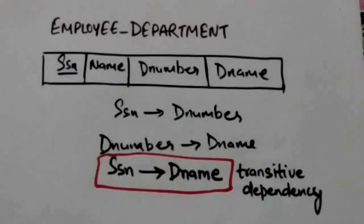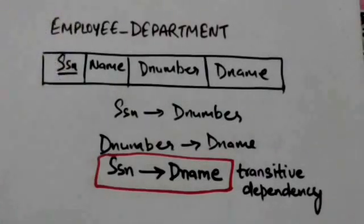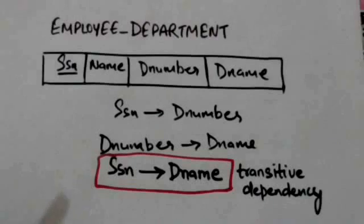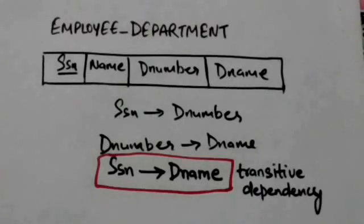Therefore, the relation schema Employee-Department is not in Third Normal Form, because the non-prime attribute D-name is transitively dependent on the primary key SSN.